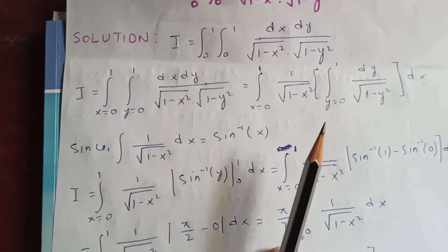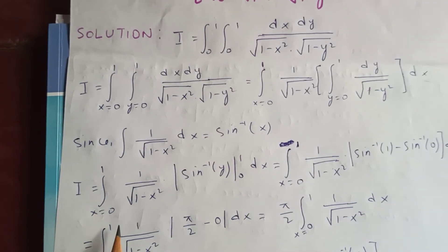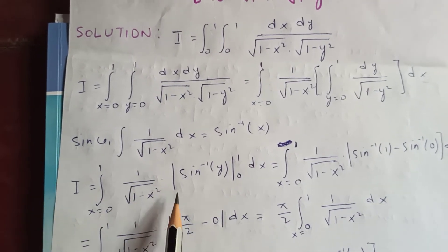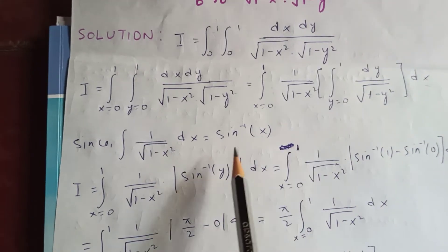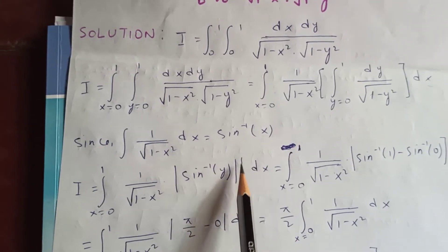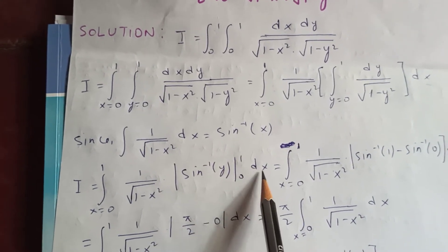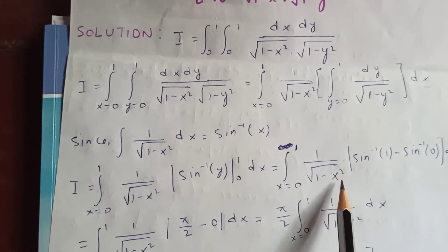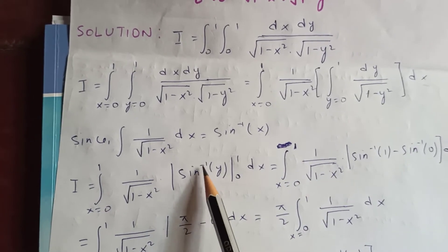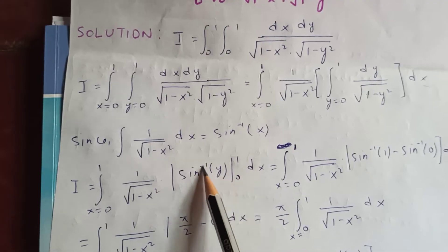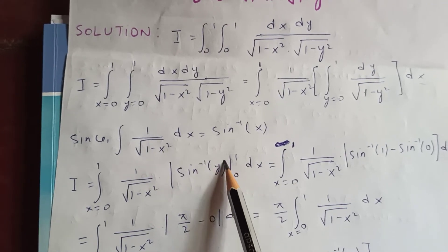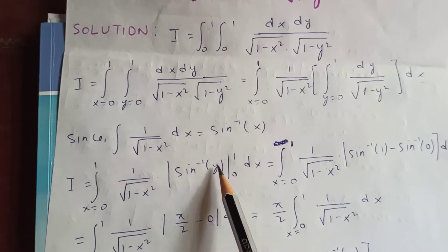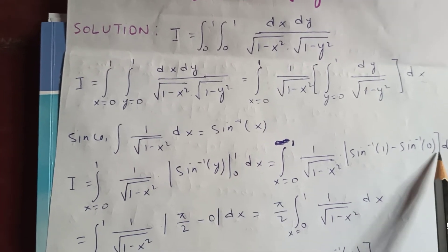We know from the basic definition that the integral of 1 over square root of 1 minus x squared dx is sin inverse of x. Just apply that here. So i equals the integral from x equal to 0 to 1 of 1 over square root of 1 minus x squared, and this inner integral is nothing but sin inverse of y from 0 to 1, times dx.